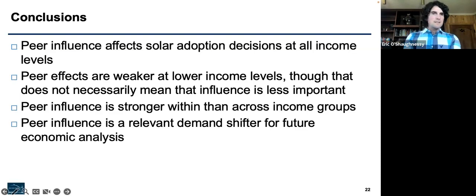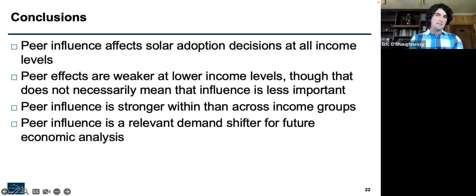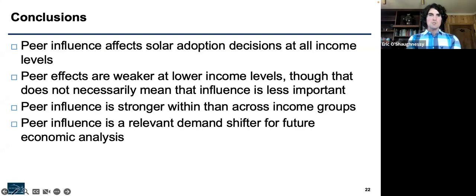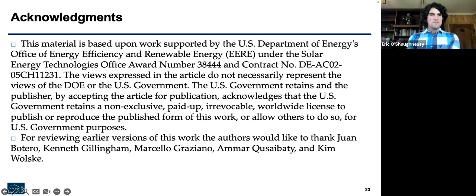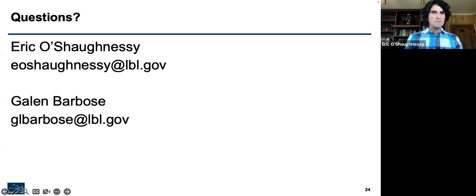To reiterate the conclusions: peer influence affects adoption at all income levels. Peer effects are weaker at lower income levels, but that does not necessarily mean influence is less important — it just means influence is less likely to translate to adoption, at least that's our hypothesis. Influence is stronger within than across income groups. And a note for researchers: influence is strong enough in these models that it should always be considered in analyses of what drives rooftop solar adoption decisions. Thanks to our funders and the various folks that advised on this work.